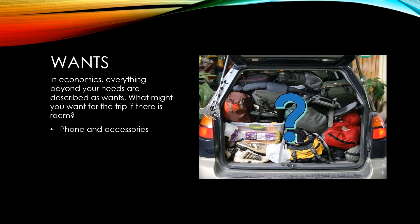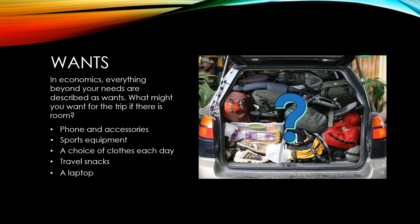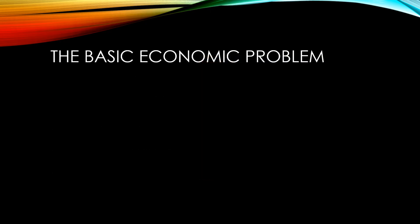Other things you might like to put in the car might include sports equipment. You might like to have a choice of clothes each day rather than just what you need. You might like to have travel snacks for the car or take a laptop with you. Our car trip dilemma provides us with an example of the basic economic problem — that is, unlimited wants versus scarce resources. In this case, it's the unlimited number of things we might like to take on the trip versus the limited space we have in the car.